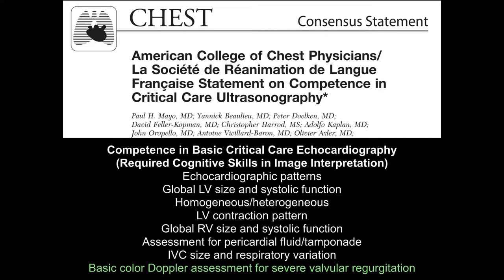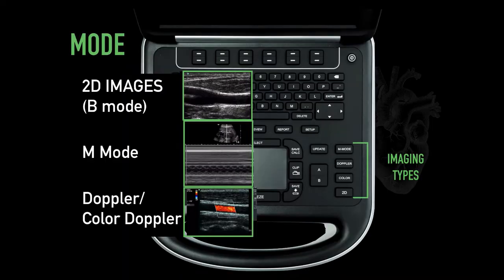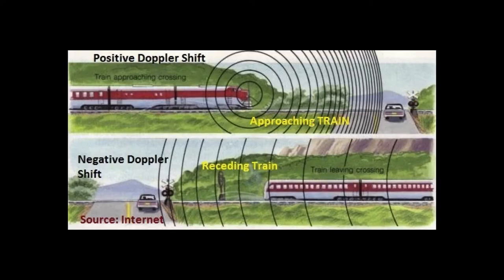This is covered in another tutorial in this video series. Color Doppler aids the 2D imaging in the visualization of rapidly moving elements that are not processed in 2D or B-mode imaging. It is obtained by selecting the color option on the ultrasound machine. The Doppler effect forms the basis of color Doppler.